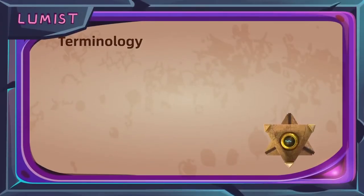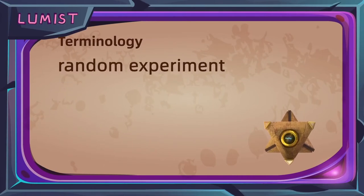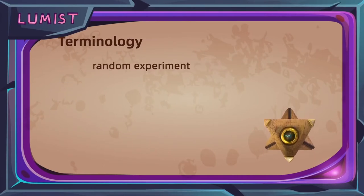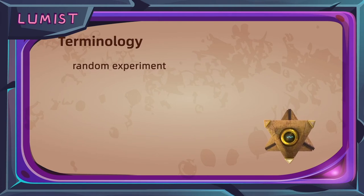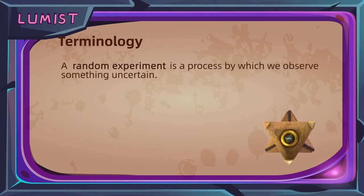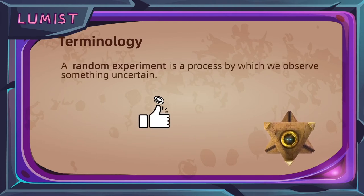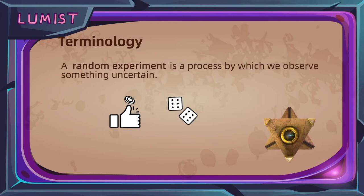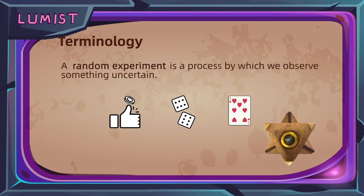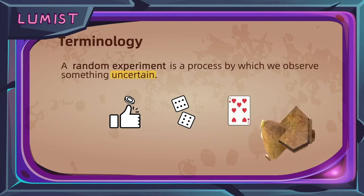The first concept we will talk about is called the random experiment. This is the technical term for observing something uncertain. The process of flipping a coin, rolling a die, or drawing a card can also be called random experiments, as we do not know the outcome beforehand.